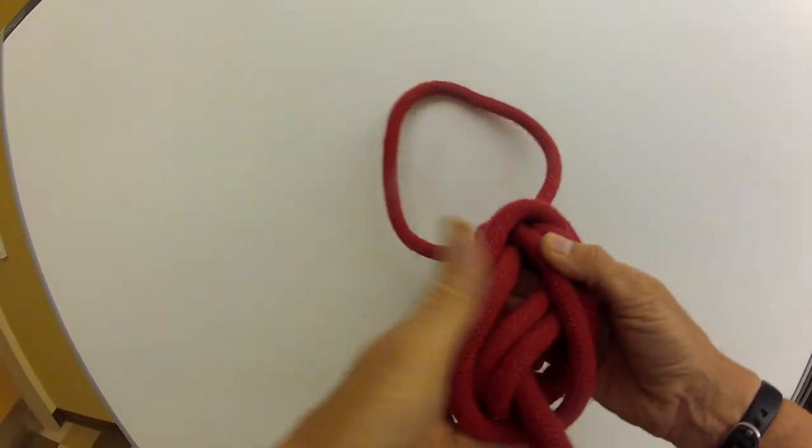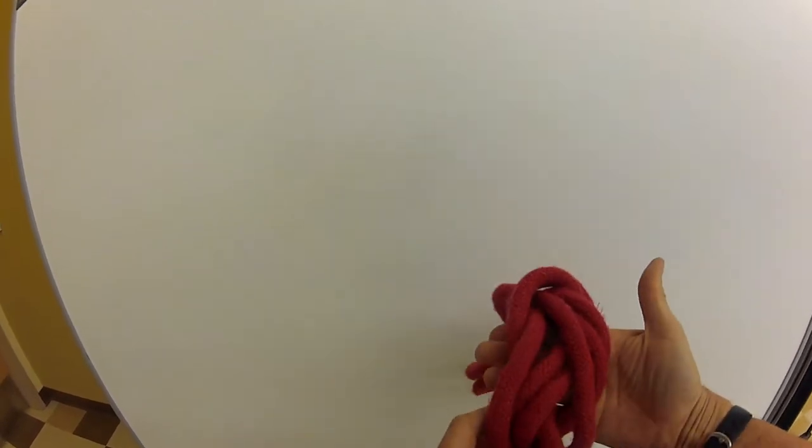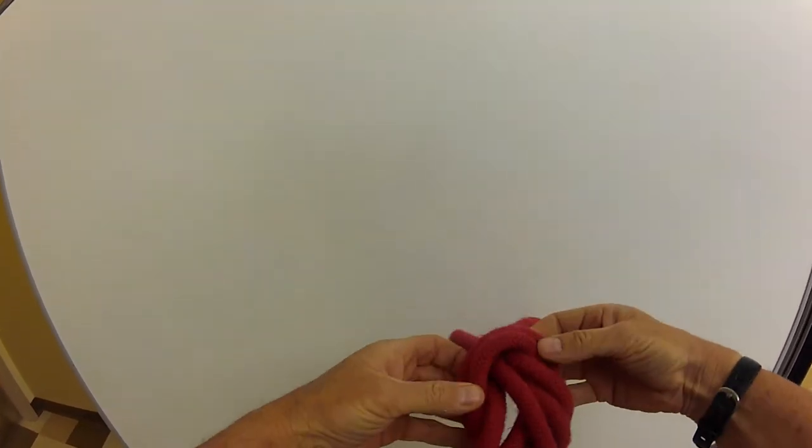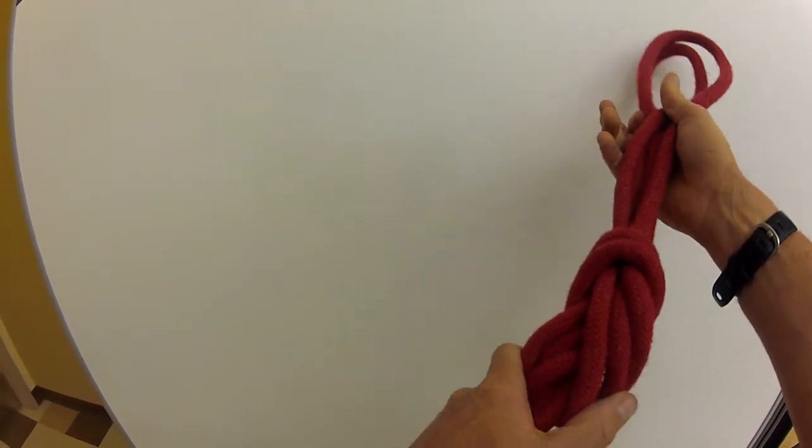Now I have my knot. You can see it's a figure eight with two loops, but I need to dress it up a little bit. So here again, pop that loop over the top and set it down.